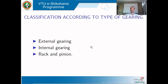One more classification of gears is by the type of gearing — that is, how the gears are in contact with each other. Whether the meshing happens externally or internally determines whether you have external gearing, internal gearing, or rack and pinion.